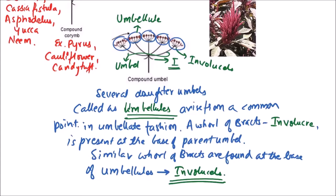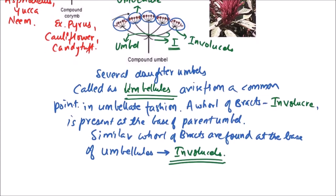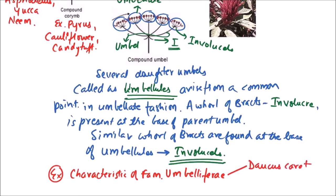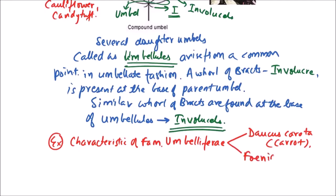Compound umbel has involucre at the parent umbel base. It is the characteristic of family Umbelliferae. The examples include Daucus carota, i.e., carrot; Foeniculum vulgare, i.e., fennel, also known as sauf; and Coriandrum sativum, i.e., coriander or dhania.